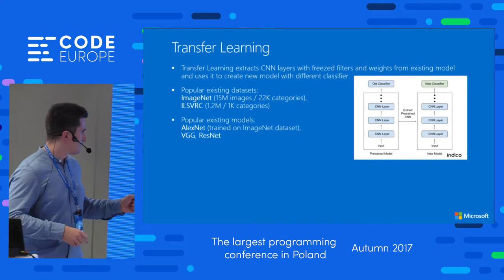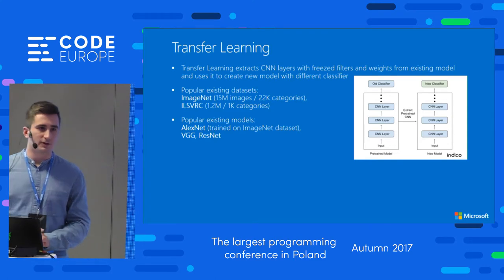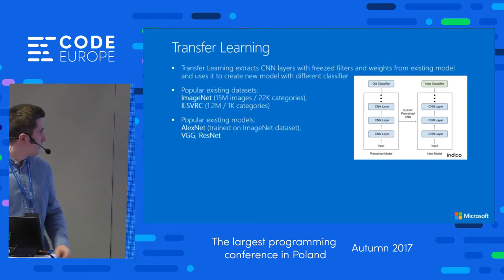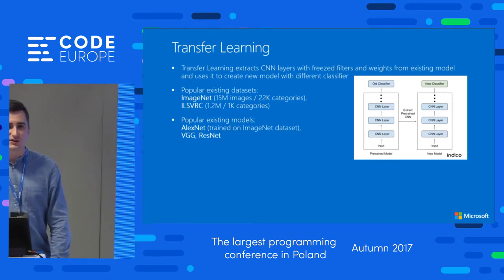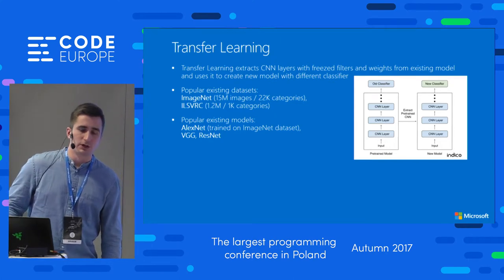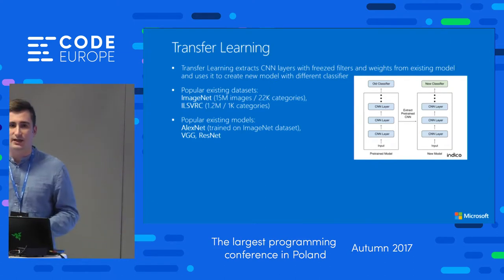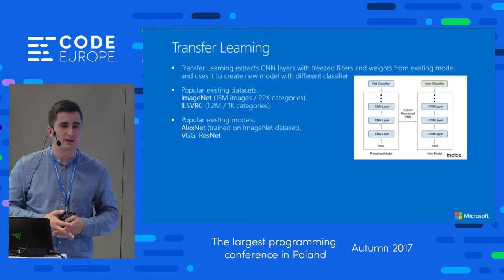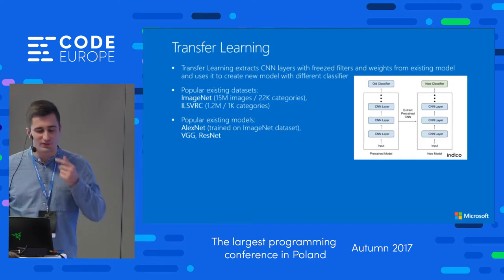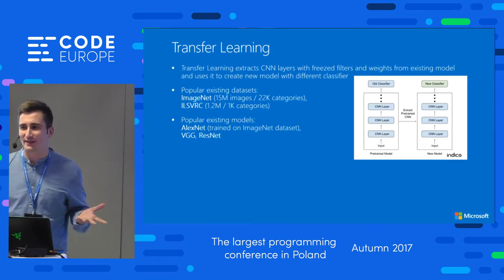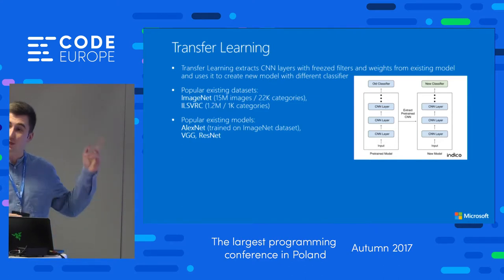That dataset is part of an even bigger one with 15 million images and 22,000 classes. Doing quick math, per category they had around 1,000 images — this is huge and we couldn't afford it. We only had three days to do a POC and get some results. That's why we used Transfer Learning.